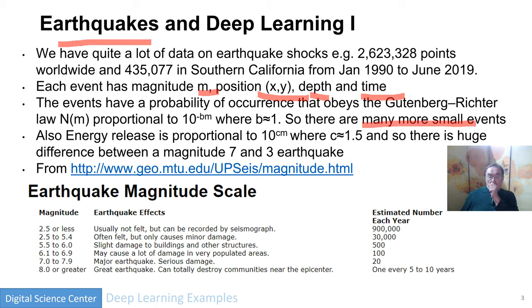We have lots of small events in that sample and we're trying to predict the big events. The energy is actually proportional to roughly ten to the 1.5 times the magnitude, so the big earthquakes have a lot of energy. There's a huge difference in energy between magnitude 7 and 3. Eight is a great earthquake, seven to eight is major, six to seven can be pretty damaging, and things below that are modest in their impact. Great earthquakes are less than one per year; seven to eight is around 20 per year.